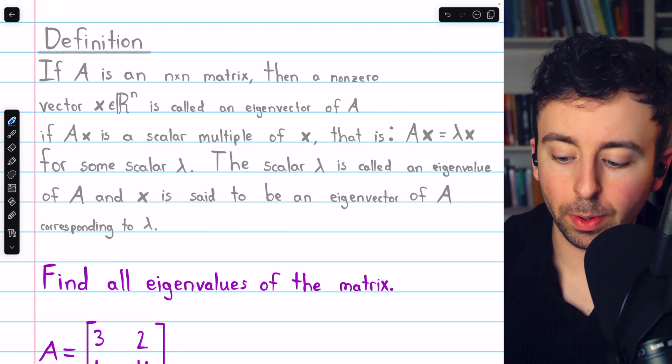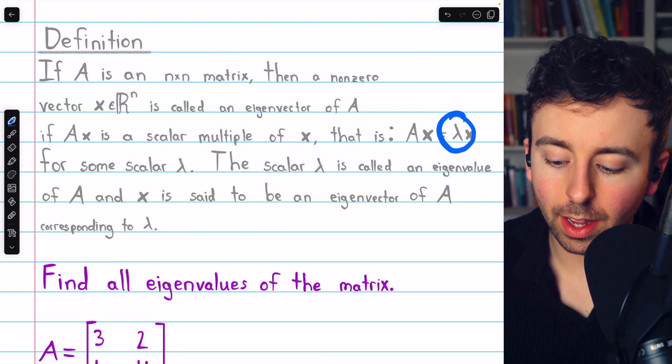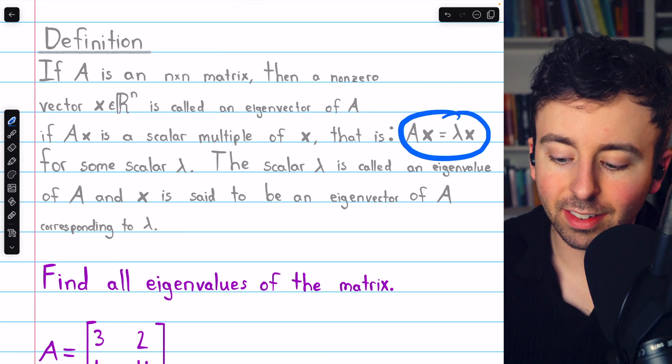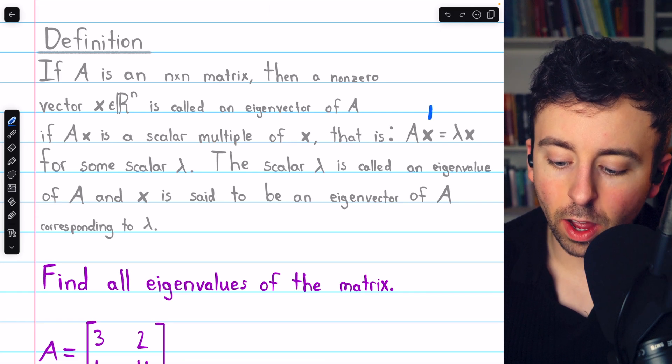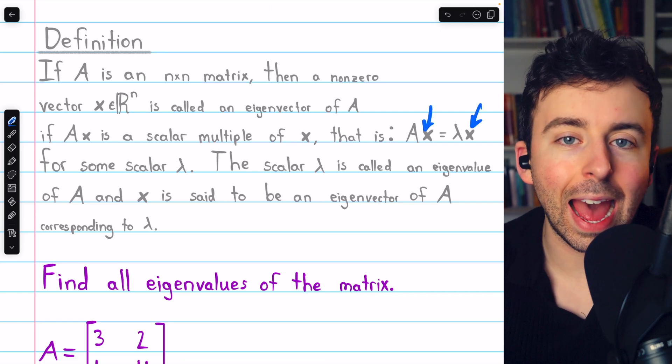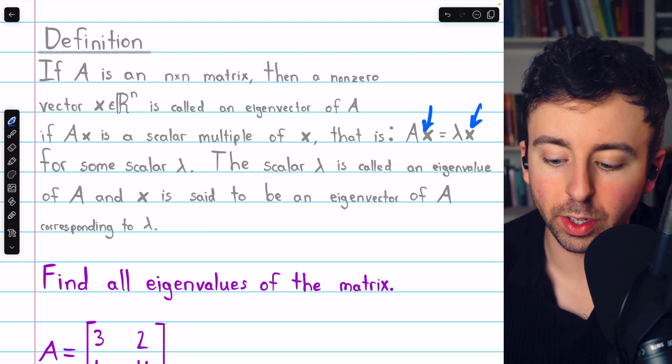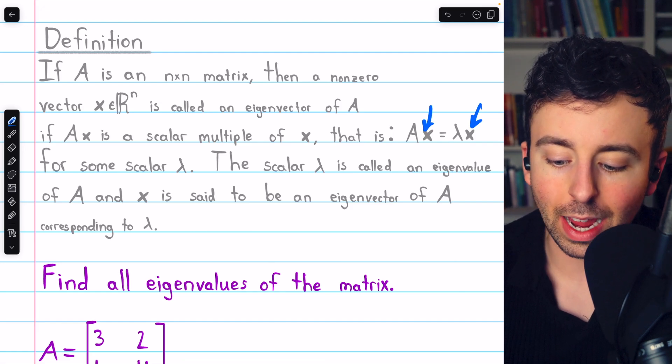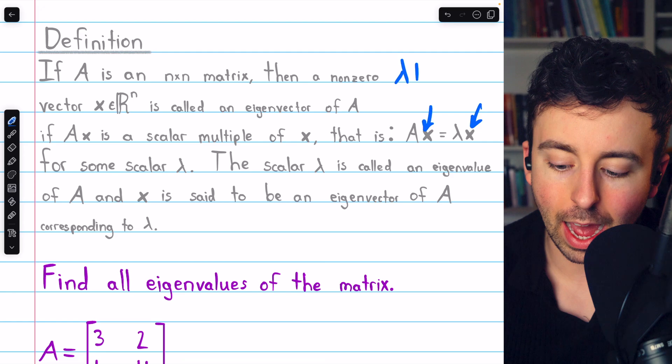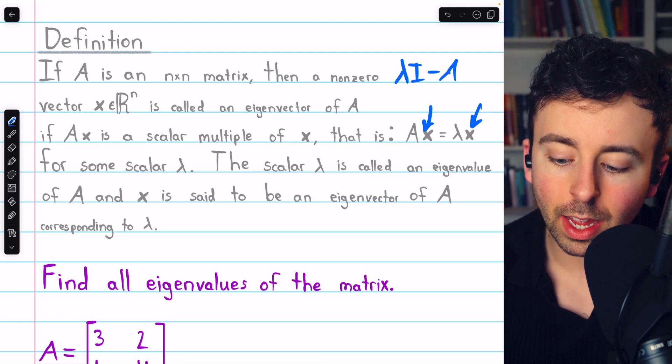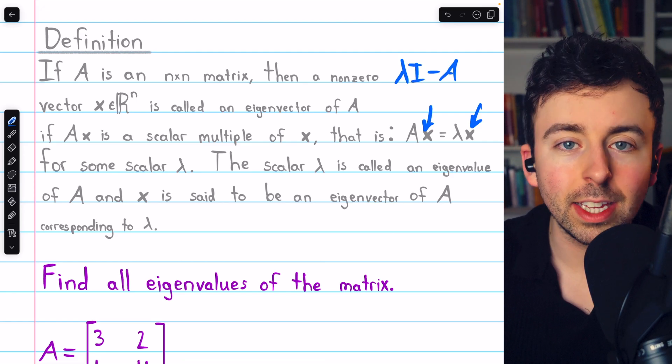The eigenvalues, remember, are the values lambda so that this system, Ax equals lambda x, has non-trivial solutions for x. And in order to check that this system will have non-trivial solutions, we will need to take the matrix lambda I minus A and set its determinant equal to 0.